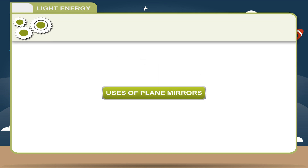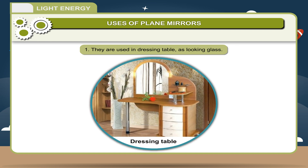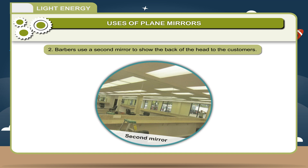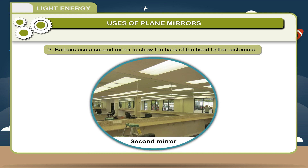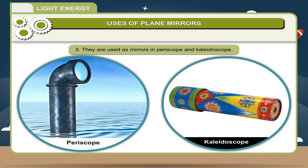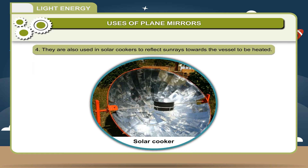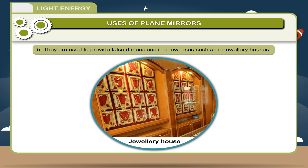Uses of Plane Mirrors: They are used in dressing tables as looking glass. Barbers use a second mirror to show the back of the head to customers. They are used as mirrors in periscopes and kaleidoscopes. They are also used in solar cookers to reflect sun rays towards the vessel to be heated. They are used to provide false dimensions in showcases such as in jewellery houses.